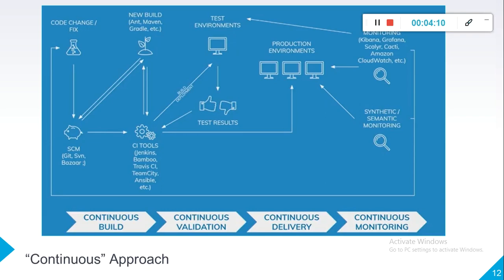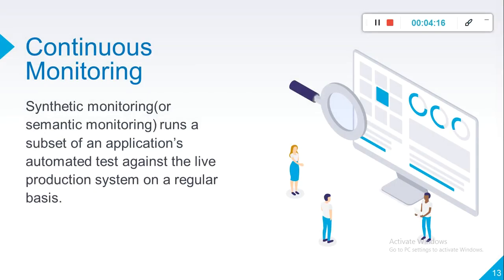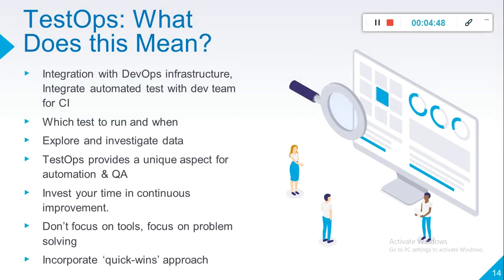In the continuous monitoring phase, we have synthetic and semantic monitoring. This means running a subset of application automated tests against the live production environment on a regular basis. These tests belong to highly critical areas, high-risk-based areas, or the most-used areas of our application. We define a schedule for these automated tests to run on the production environment — either weekly, daily, or based on your system health.